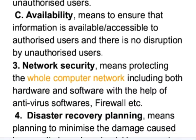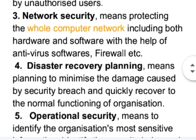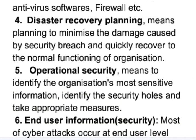Next is network security — it means protecting the whole computer network including both hardware and software with the help of antivirus software, firewall, etc. Next is disaster recovery planning: here 'disaster' means a cyber attack has already taken place and damage has occurred. Disaster recovery planning means planning to minimize the damage caused by a security breach and quickly recover to the normal functioning of an organization. Next is operational security — it means to identify the organization's most sensitive information, identify security holes, and take appropriate measures.